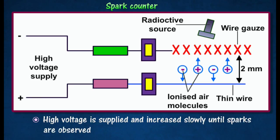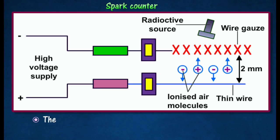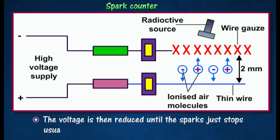The voltage is increased until sparks occur. The sudden collisions among ions and air molecules create sparks. The voltage is then reduced slowly until no sparks are formed. This occurs when the thin wire is at a positive potential between three and four kilovolts.